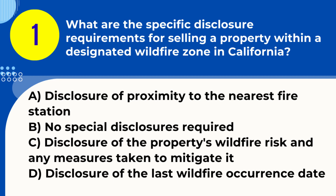Question 1. What are the specific disclosure requirements for selling a property within a designated wildfire zone in California? A. Disclosure of proximity to the nearest fire station. B. No special disclosures required. C. Disclosure of the property's wildfire risk and any measures taken to mitigate it. D. Disclosure of the last wildfire occurrence date.